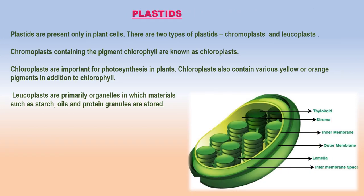Plastids. Plastids occur in most plant cells and are absent in animal cells. Like mitochondria, plastids also have their own genome and ribosomes, and are self-replicating organelles. Plastids are of three types: 1. Chromoplasts — colored plastids, except green. 2. Chloroplasts — green colored plastids. 3. Leucoplasts — colorless plastids.